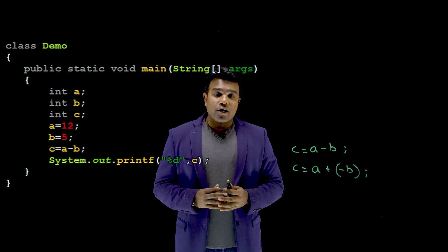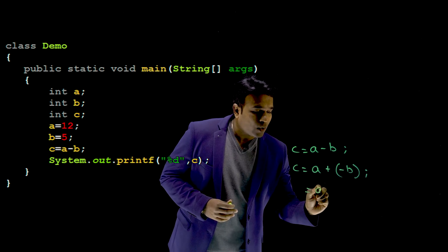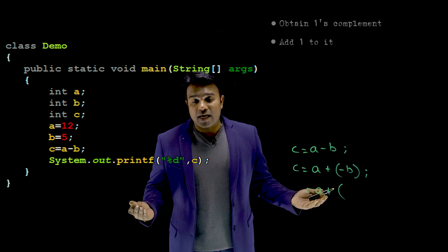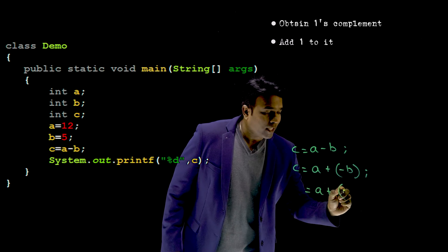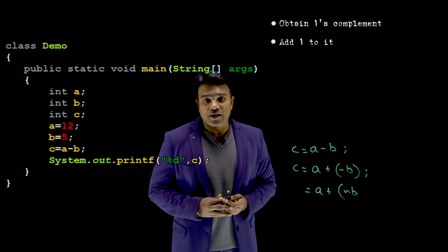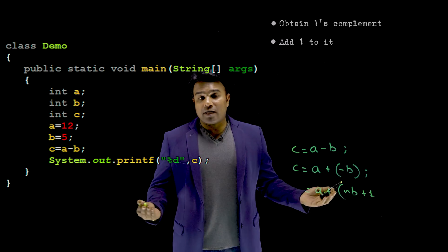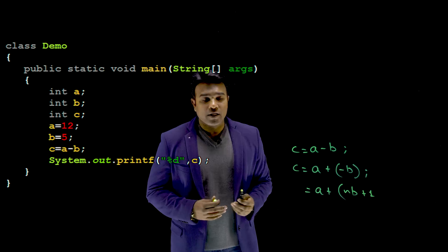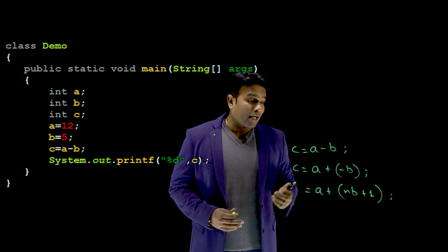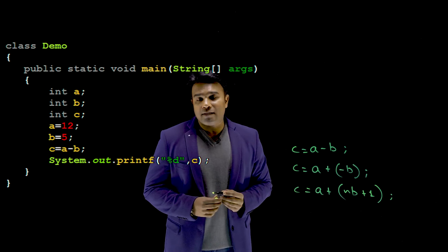With the knowledge just gathered, I can replace this with this. A negative number can be obtained by first obtaining the 1's complement — this is how I obtain the 1's complement — and then adding a 1 to it, which is how I obtain the 2's complement. So a negative number can also be written like this, and that is what I store in C.